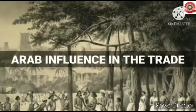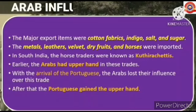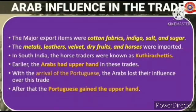Next, let's study about the Arab influence in trade. The major export items were cotton fabrics, indigo, salt, and sugar. Metals, leathers, velvet, dry fruits, and horses were imported. In South India, the horse traders were known as Kudra Chettis. Earlier, the Arabs had the upper hand in these trades.